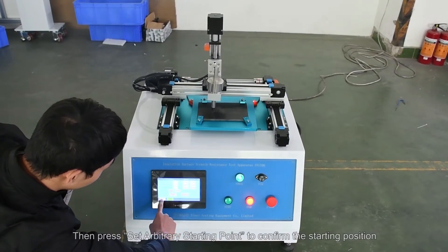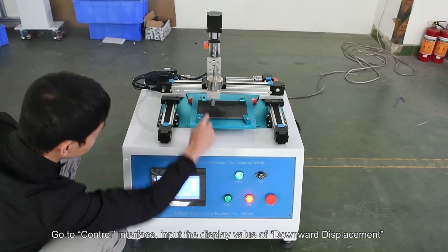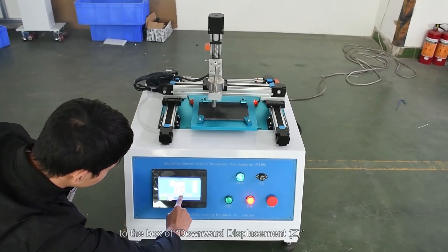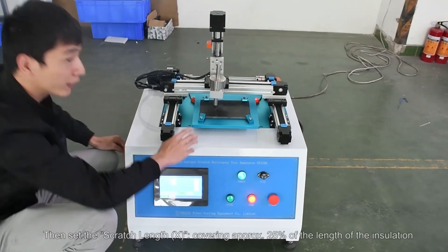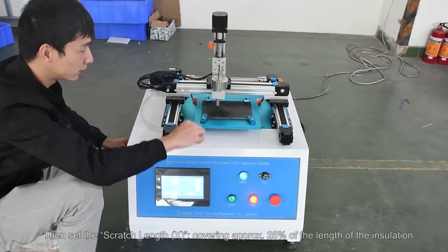Go to control interface. Input the display value of downward displacement to the box of downward displacement Z. Then set the scratch length X covering approximately 25% of the length of the insulation.